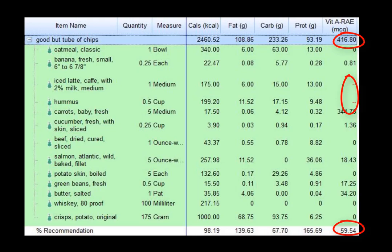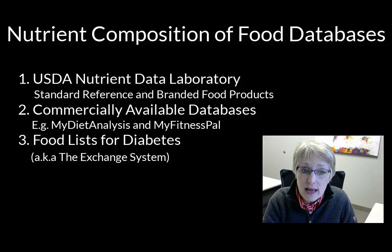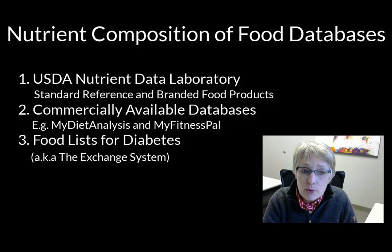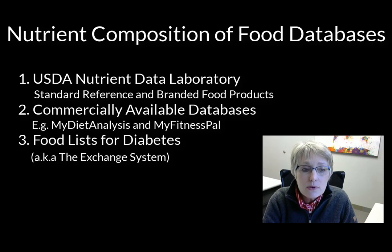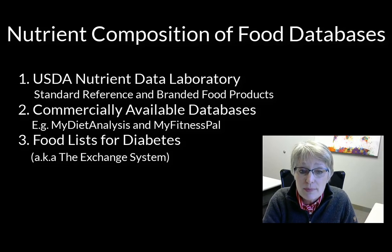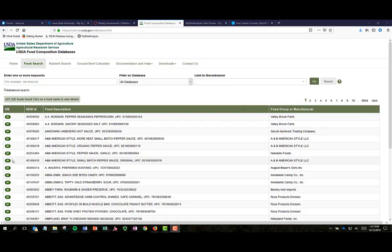It's important to look at the nutrient values, examine those spreadsheets, and identify any missing data that might indicate wrong total values. We're going to look at nutrient composition databases and identify which ones to use, their limitations, and appropriate uses. Specifically, we'll look at the USDA Nutrient Data Laboratory — the standard reference and branded food products — a couple of commercially available databases (My Diet Analysis and MyFitnessPal), and the Food List for Diabetes, often called the exchange system.